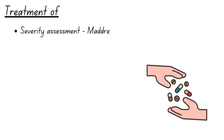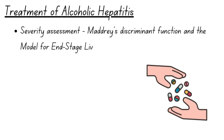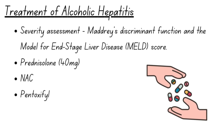In cases of alcoholic hepatitis, the severity of the disease should be assessed using validated scoring systems such as Maddrey's discriminant function and Model for End-Stage Liver Disease, also known as the MELD score. For severe alcoholic hepatitis without active bleeding or superadded infection, prednisolone is typically initiated at a dose of 40 mg daily. Intravenous N-acetylcysteine may also be considered in severe cases, and pentoxifylline has shown utility in some patients.